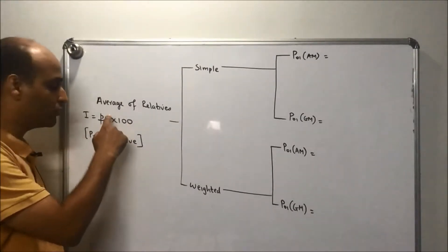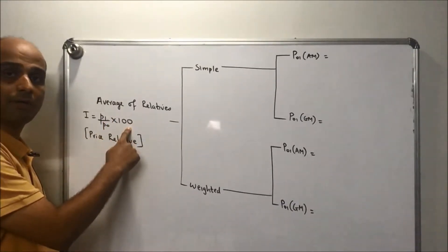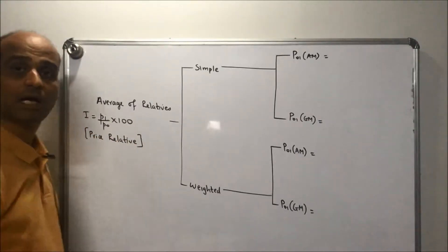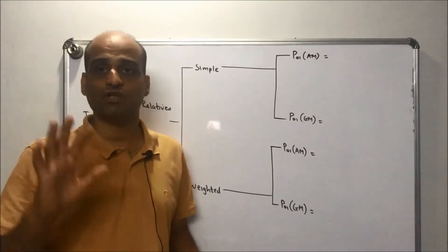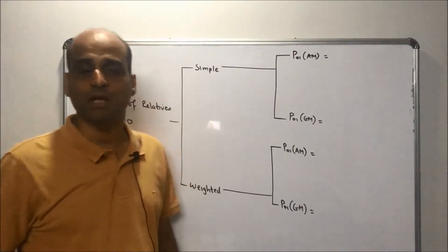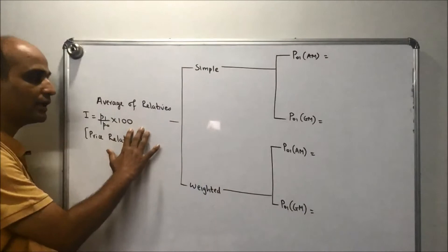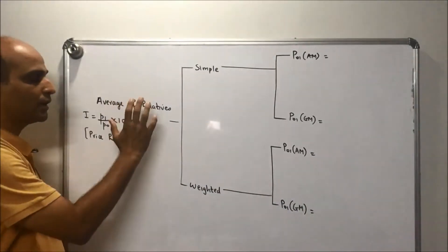The price relative is often denoted by I or even P sometimes. In the table it's just mentioned as index, so basically those are nothing but price relatives.